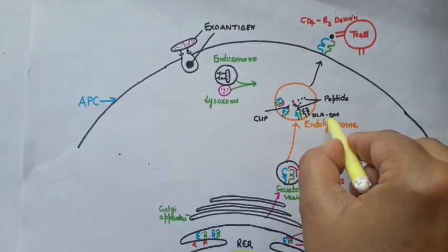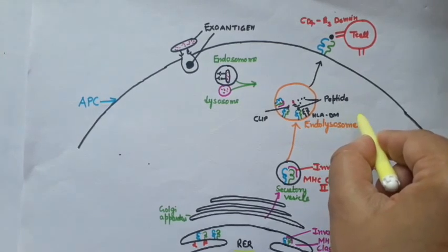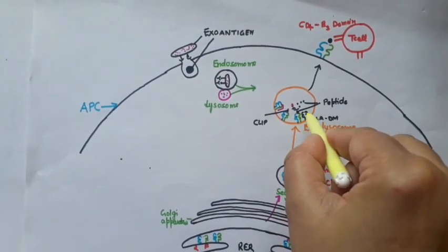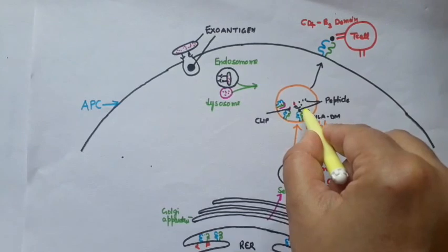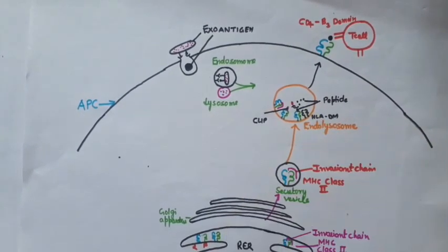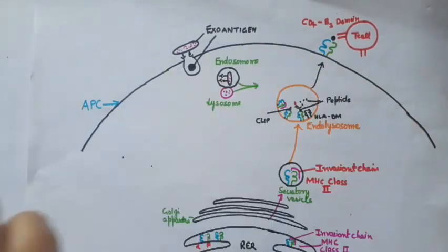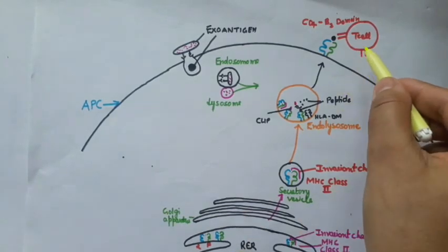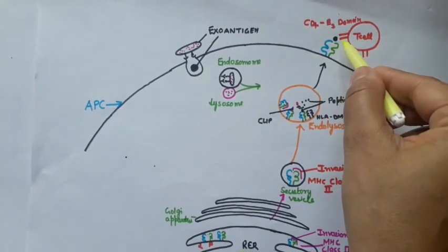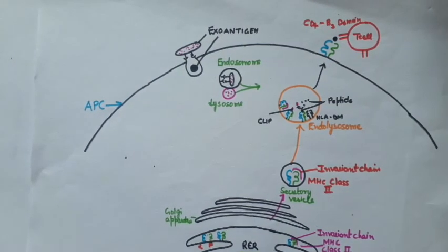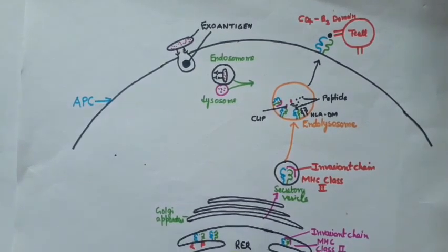The HLA-DM complex — the non-classical MHC class 2 molecule — helps in the exchange of CLIP with the peptide, so the peptide joins the peptide binding site of the MHC class 2 molecule. This MHC class 2–peptide complex is then displayed on the surface of the antigen presenting cell for recognition by the T cell. The T cell recognizes the peptide. This diagram clearly shows how exogenous antigen is internalized, digested, and then presented on the cell surface for T cell recognition.